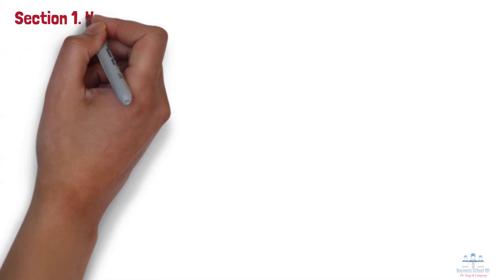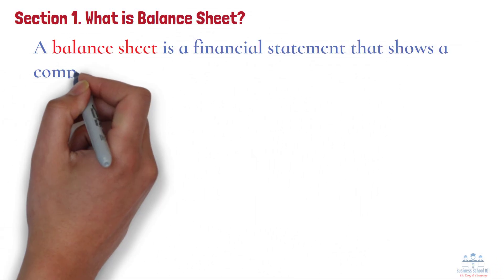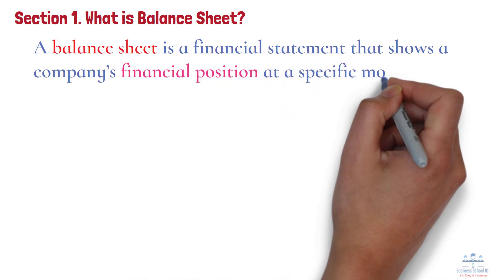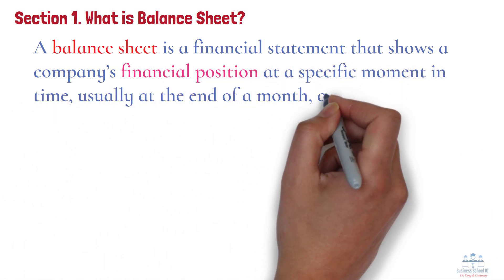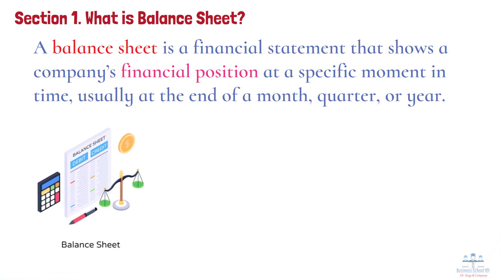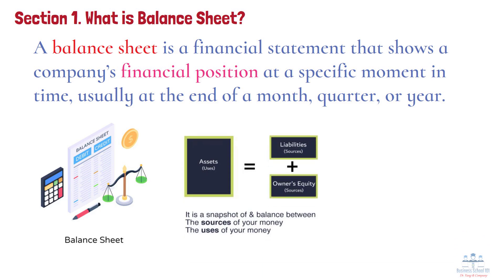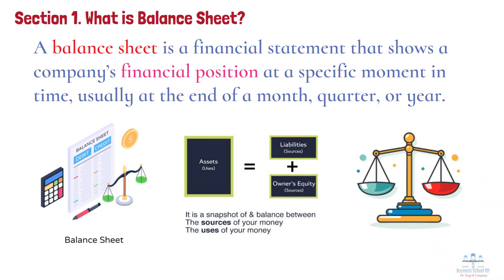Section 1: What is a balance sheet? A balance sheet is a financial statement that shows a company's financial position at a specific moment in time, usually at the end of a month, quarter, or year. It provides a snapshot of everything the company owns, everything it owes, and what's left for the owners. A balance sheet is divided into three main parts: assets, liabilities, and owner's equity. These three sections follow a simple equation: assets equal liabilities plus owner's equity. This equation must always balance, which is why it's called a balance sheet.